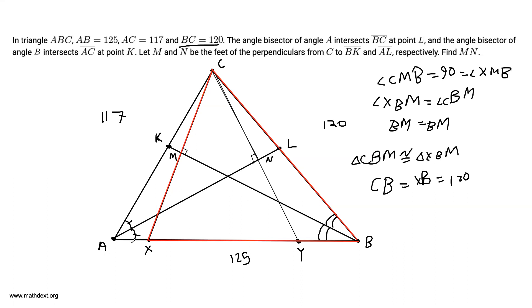But we knew that BC was equal to 120, which means that XB is 120. And therefore AX is equal to 5 since AX and BX make up segment AB, which has length 125. So BX is 120 and AX is equal to 5.